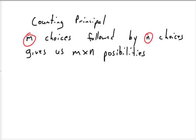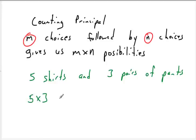So if we had five shirts and three pairs of pants, how many total outfits could we make? Well, five times three, 15 outfits. That's the counting principle. All right, that's going to be it for this video. Thanks for watching.